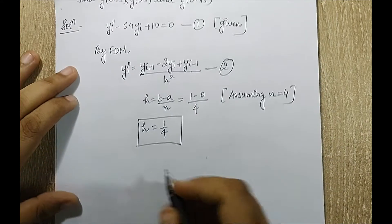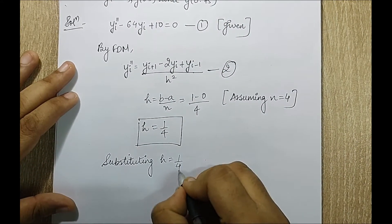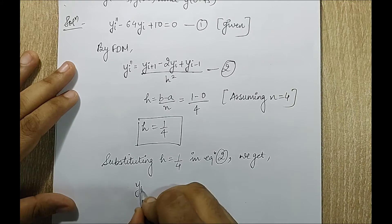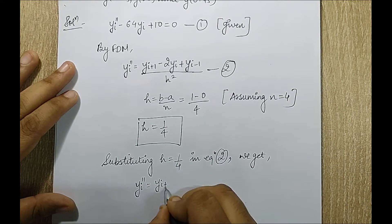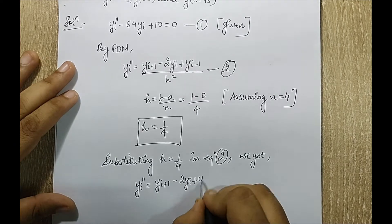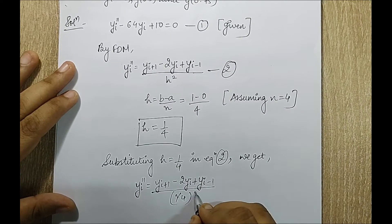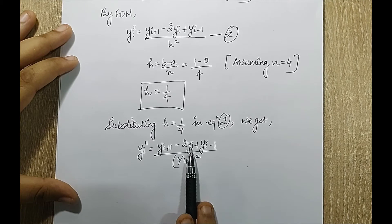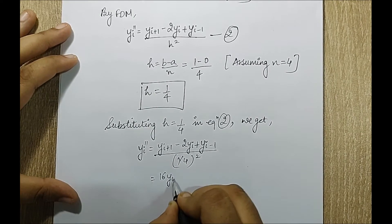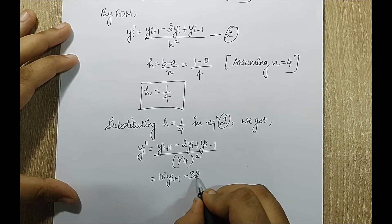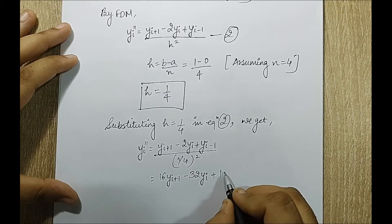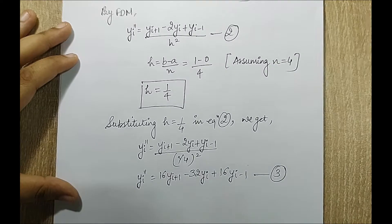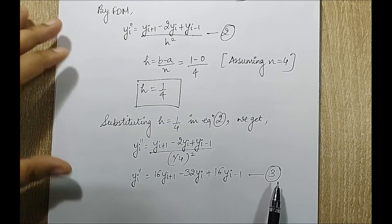When I substitute h equal to 1 by 4 into equation 2, the denominator becomes (1/4) squared, which is 1/16. The 16 goes to the numerator, so y_i double dash becomes 16y_{i+1} minus 32y_i plus 16y_{i-1}. I multiply 16 through all terms in the numerator. This result is equation number 3.